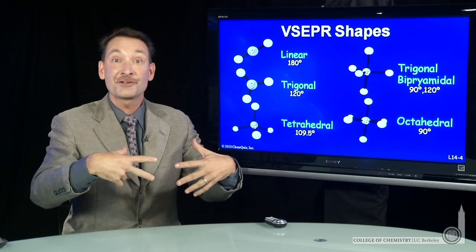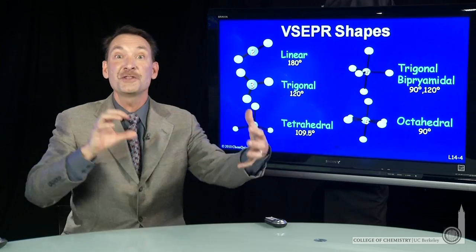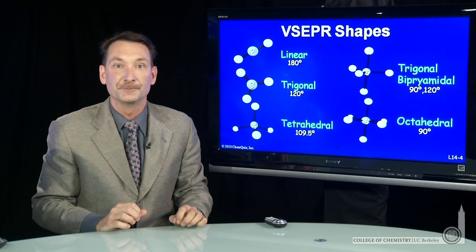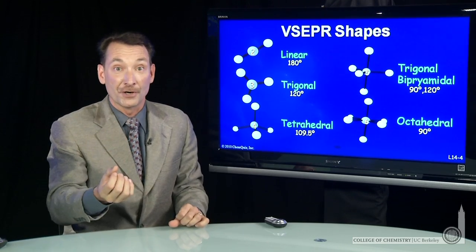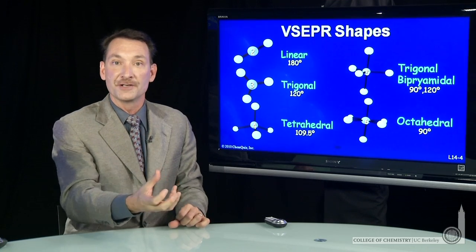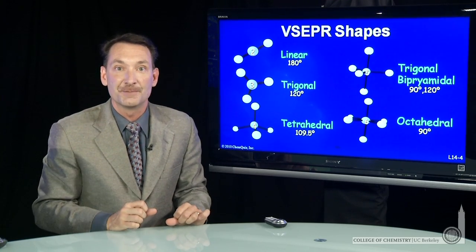That is, you have electron pairs in either bonds or lone pairs, and they repel each other, and you'd like to distribute them in space as far apart as possible. The steric number is the number of lone pairs and the number of bonded atoms. That tells you how many things you have to distribute in space.